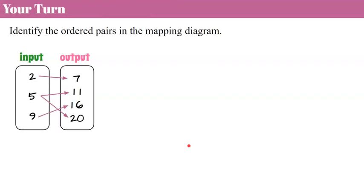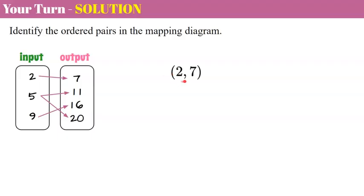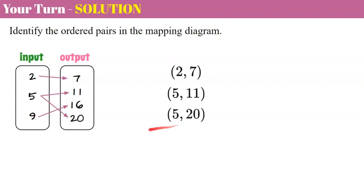Now it's your turn. Pause the video and identify the ordered pairs in the mapping diagram, then come back and hit play when you're ready. Welcome back. Our first input 2 maps to 7, so (2, 7). Our second input 5 first maps to 11, so (5, 11). Then 5 also maps to 20, so (5, 20). And the input 9 maps to 16, giving us (9, 16).